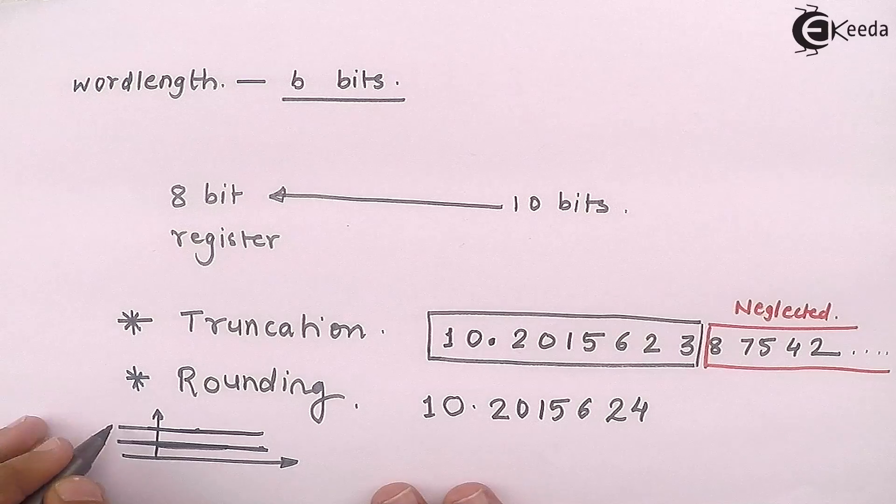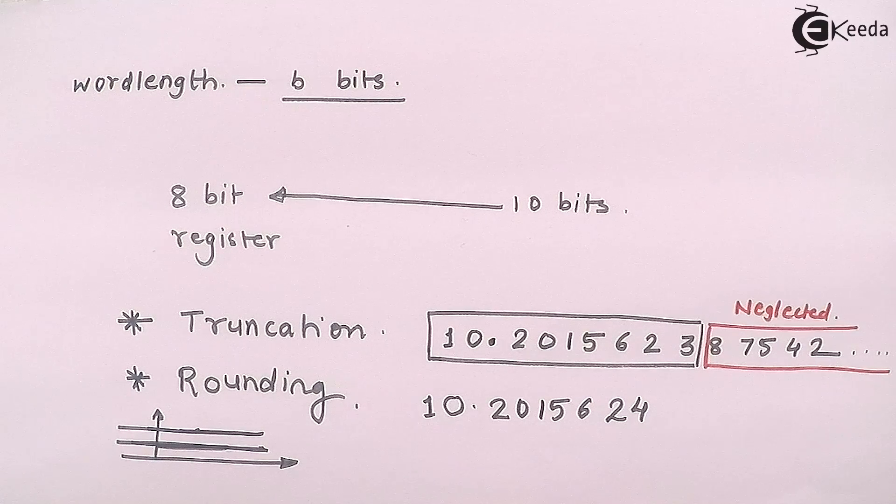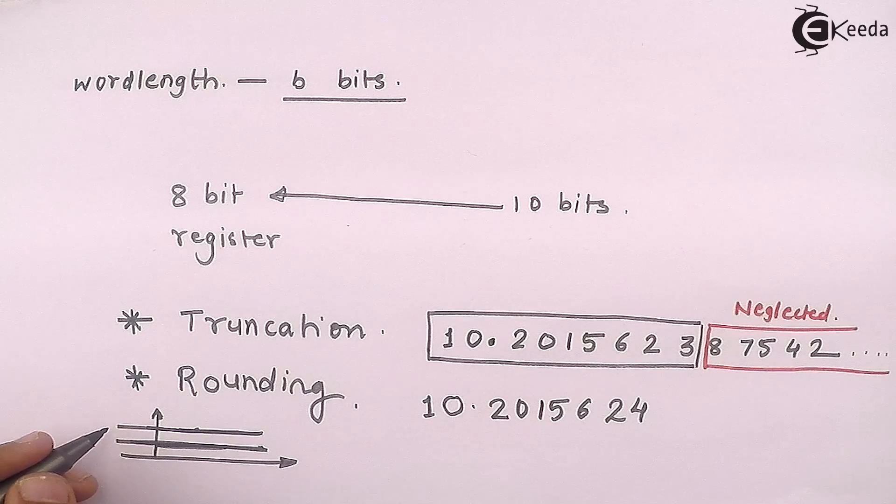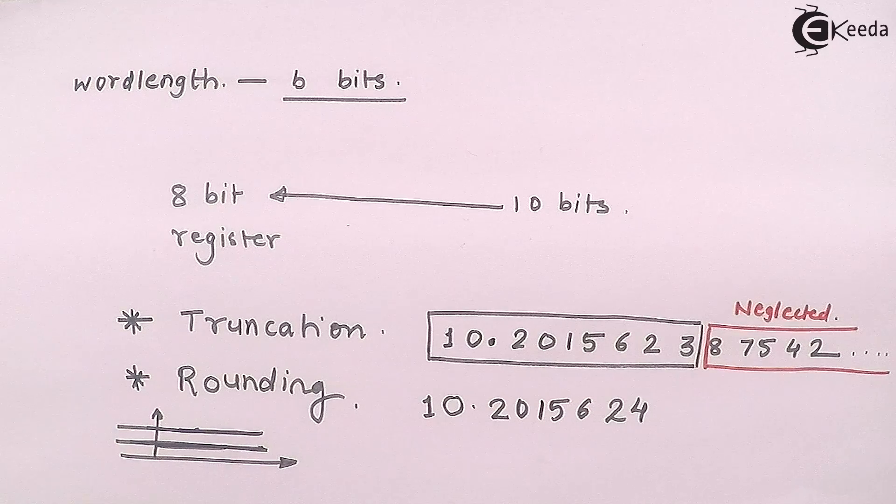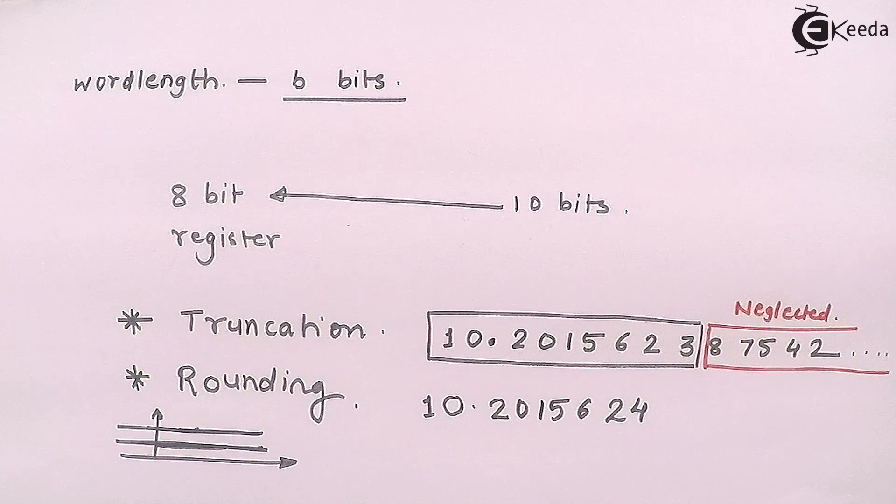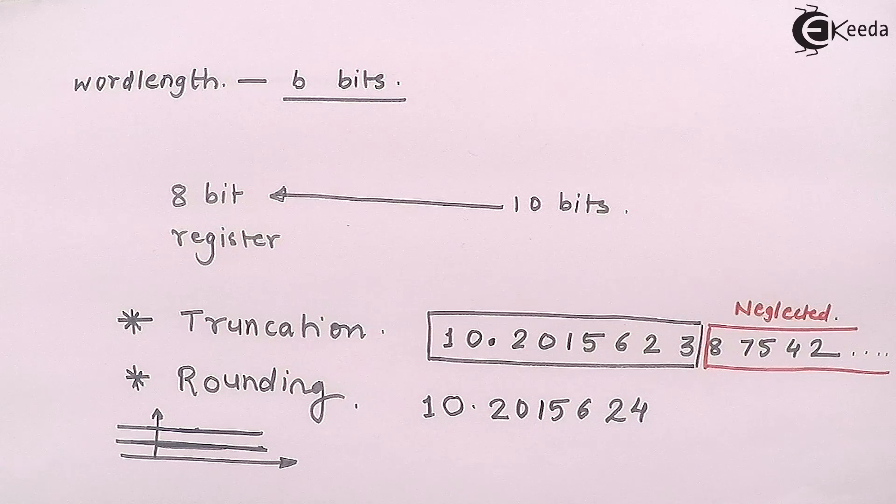So these are two regions, and the number is lying in between these two regions. Then either I will come down to this level or either I will go up to this level. So that is called as rounding.